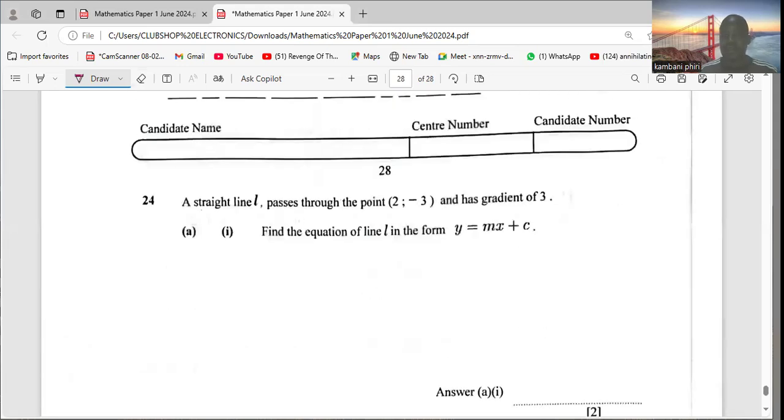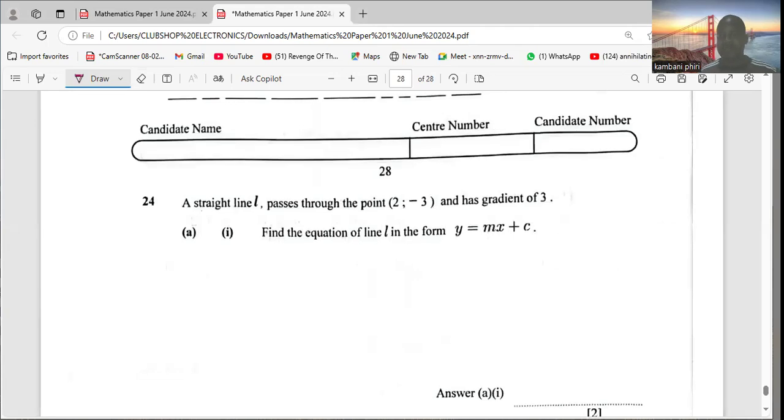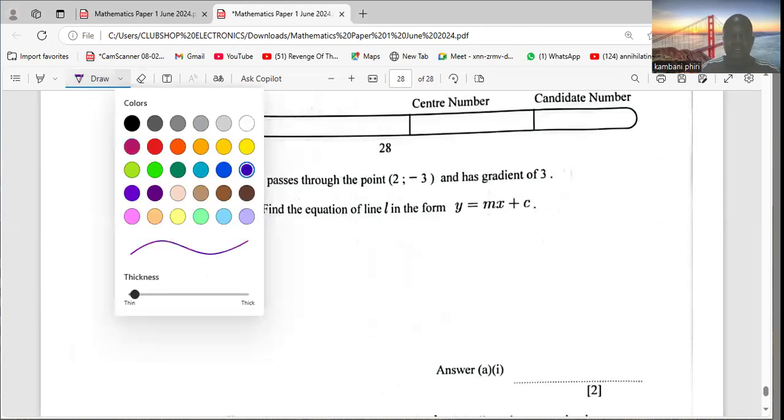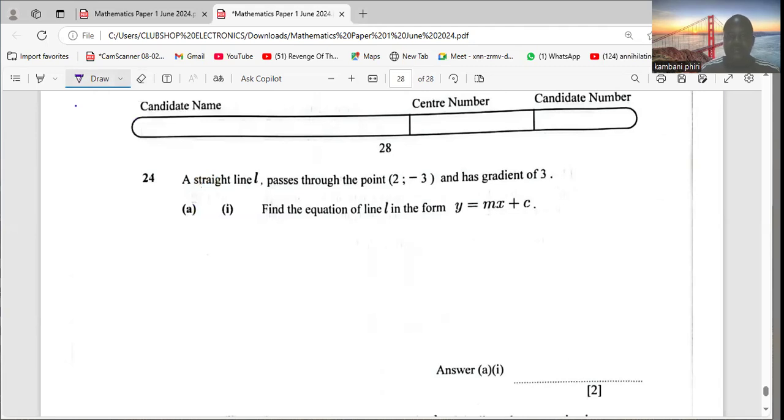The last question says: A straight line l passes through the point (2, -3) and has a gradient of 3. Number one or (a)(i): Find the equation of the line l in the form y = mx + c.